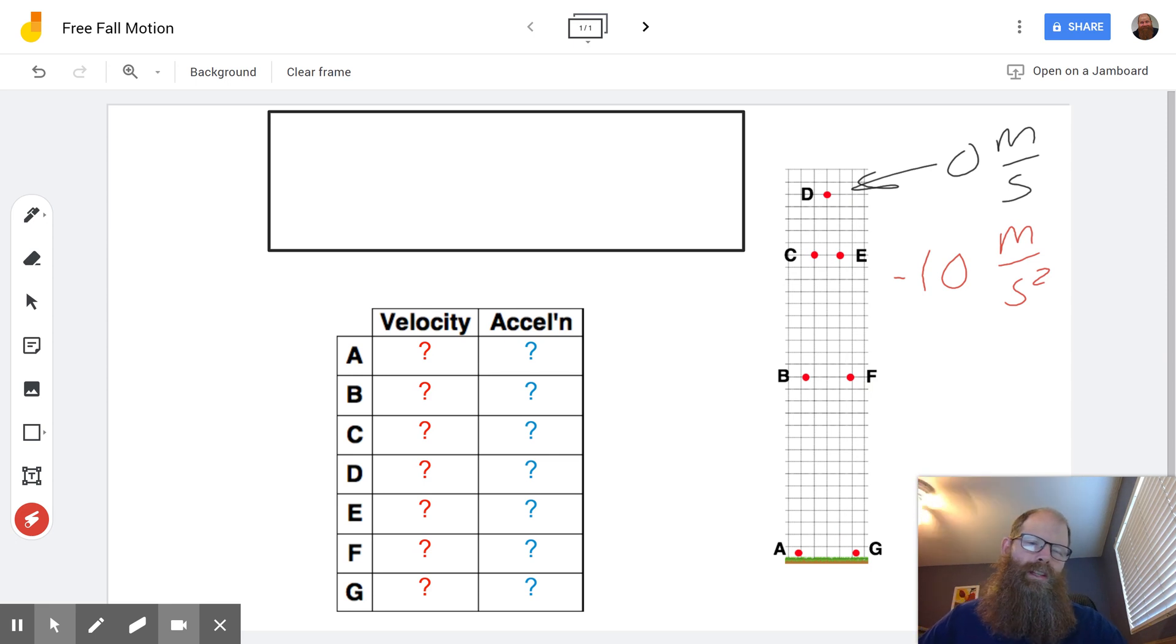And we can work backwards as well. We can say what speed must it have been going one second before it reached zero. Well if we're going to add negative 10 to something and we're going to end up with zero that's going to have to be 10. It's going upwards so a positive number makes sense, so it's going up at 10 meters per second and then a second later would be at zero.